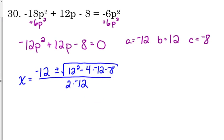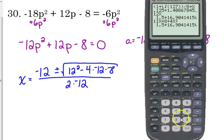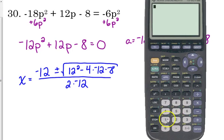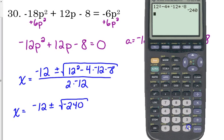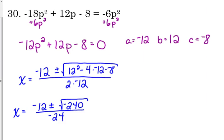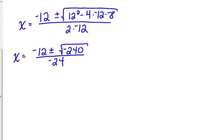So after we get all that written down, then we want to crunch all those numbers under the radical. Just focusing on that part right now. And we get negative 240. So at this moment, we can say we have two imaginary or complex solutions because we have a negative under the square root. We cannot take the square root of a negative number, so this is where the I is going to be introduced.